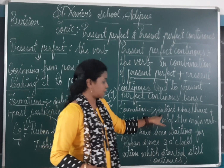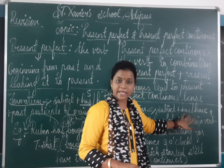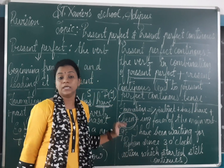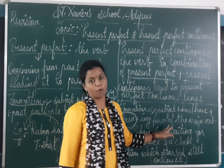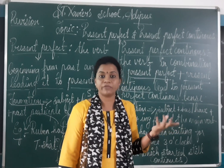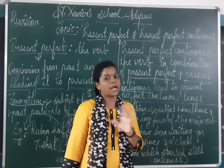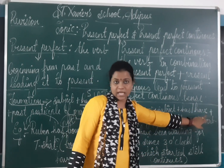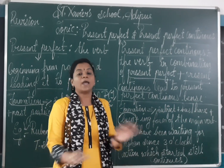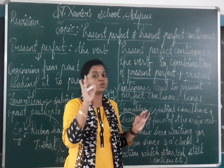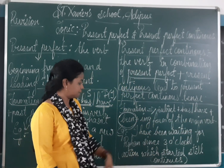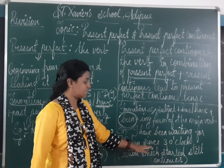Now what is the formation of present perfect continuous? Subject plus has — has for singular, have for plural — plus been. The main word here is been. Been plus the ing form of the verb — that you know from simple present continuous. When we have to show the continuous formation of the verb, we put the ing form. So: subject plus has or have, plus been, plus ing form of the verb, and the rest of the sentence.